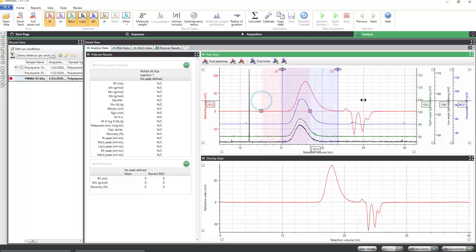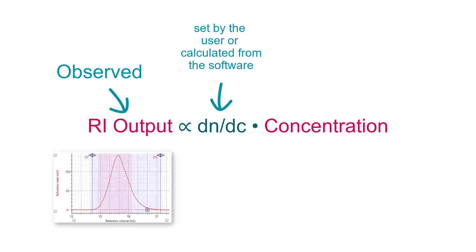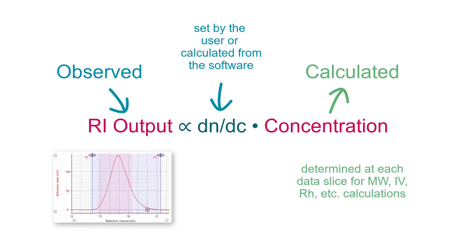These options exist to allow the user to choose how the associated DNDC value is set or determined. Utilizing a DNDC value unlocks the software's ability to calculate the sample concentration at each data slice, further allowing the calculation of absolute molecular weight, intrinsic viscosity, and other molecular parameters.